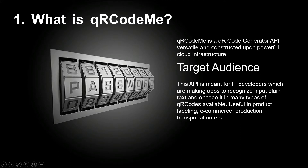Target Audience. This API is meant for IT developers which are making apps to recognize input plain text and encode it in many types of QR codes available. Useful in product labeling, e-commerce, production, transportation, etc.